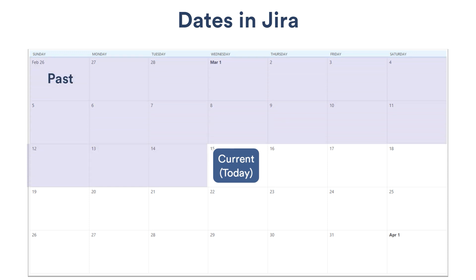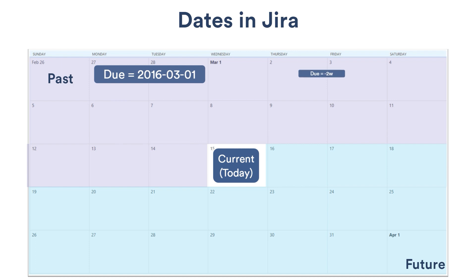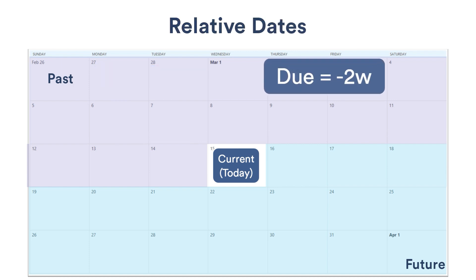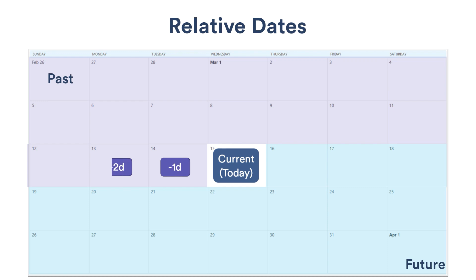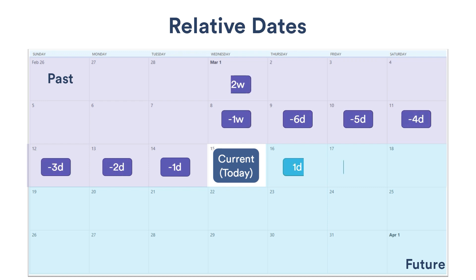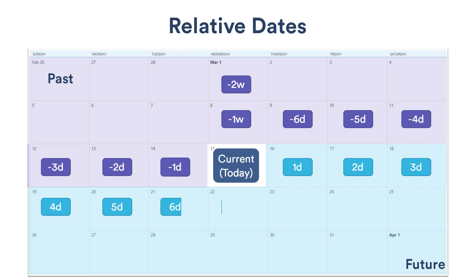You can search Jira for things that have happened in the past or that will happen in the future, using either exact or relative dates. Most of the searching we do is with relative dates. A relative date is relative to the current date, with negative numbers representing the past and positive numbers the future. Relative dates can be measured in minutes, hours, days, or weeks.